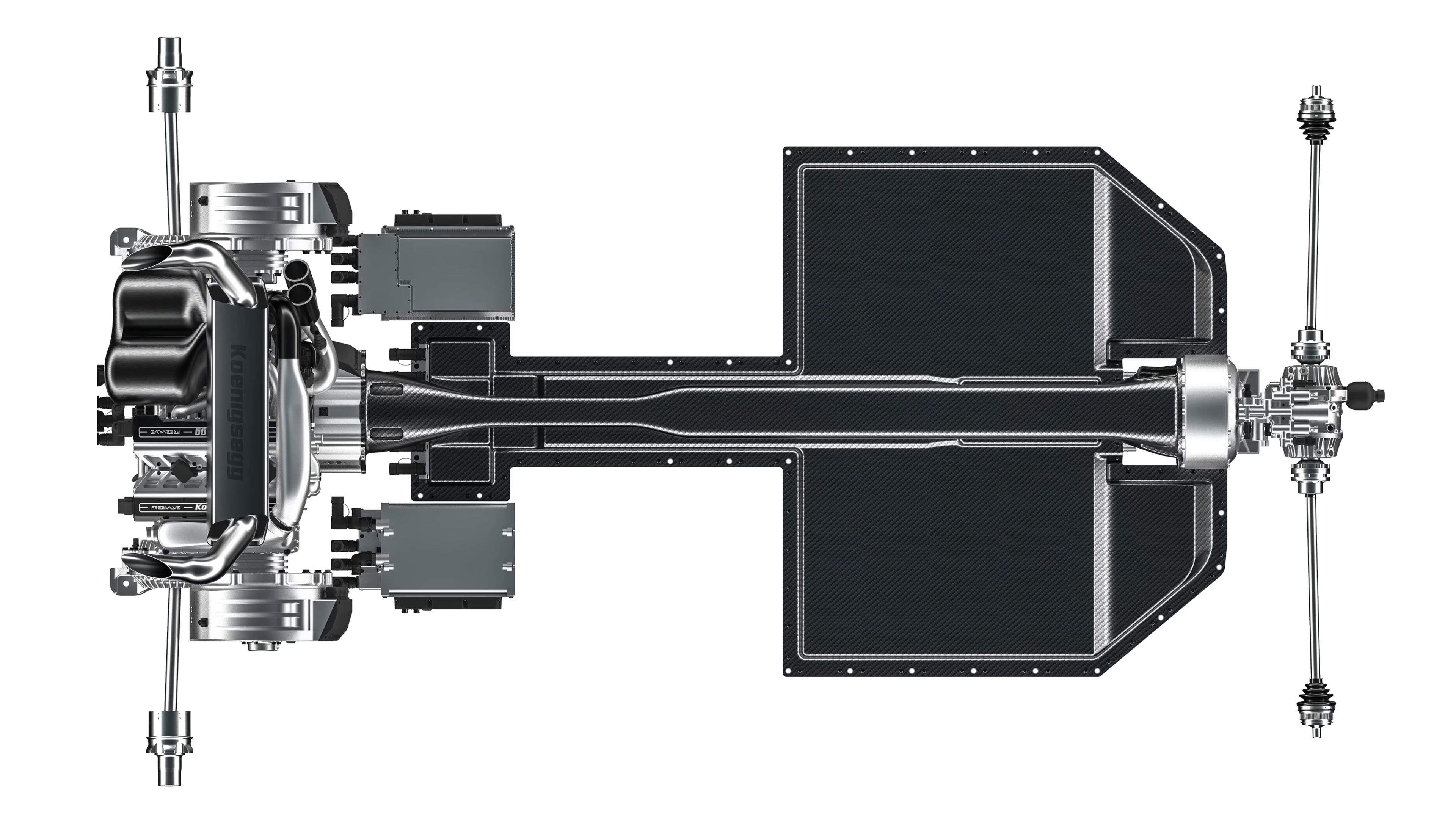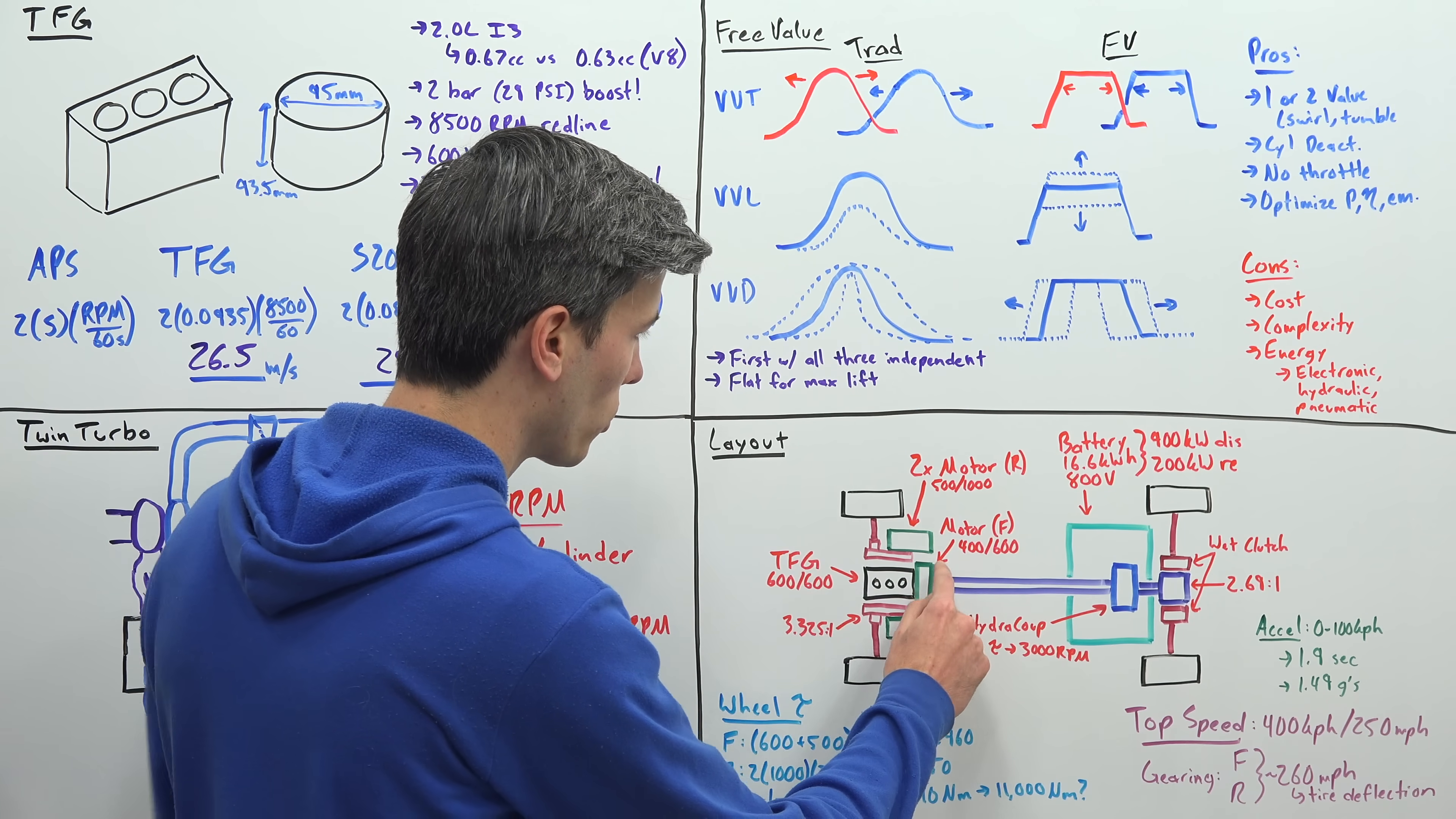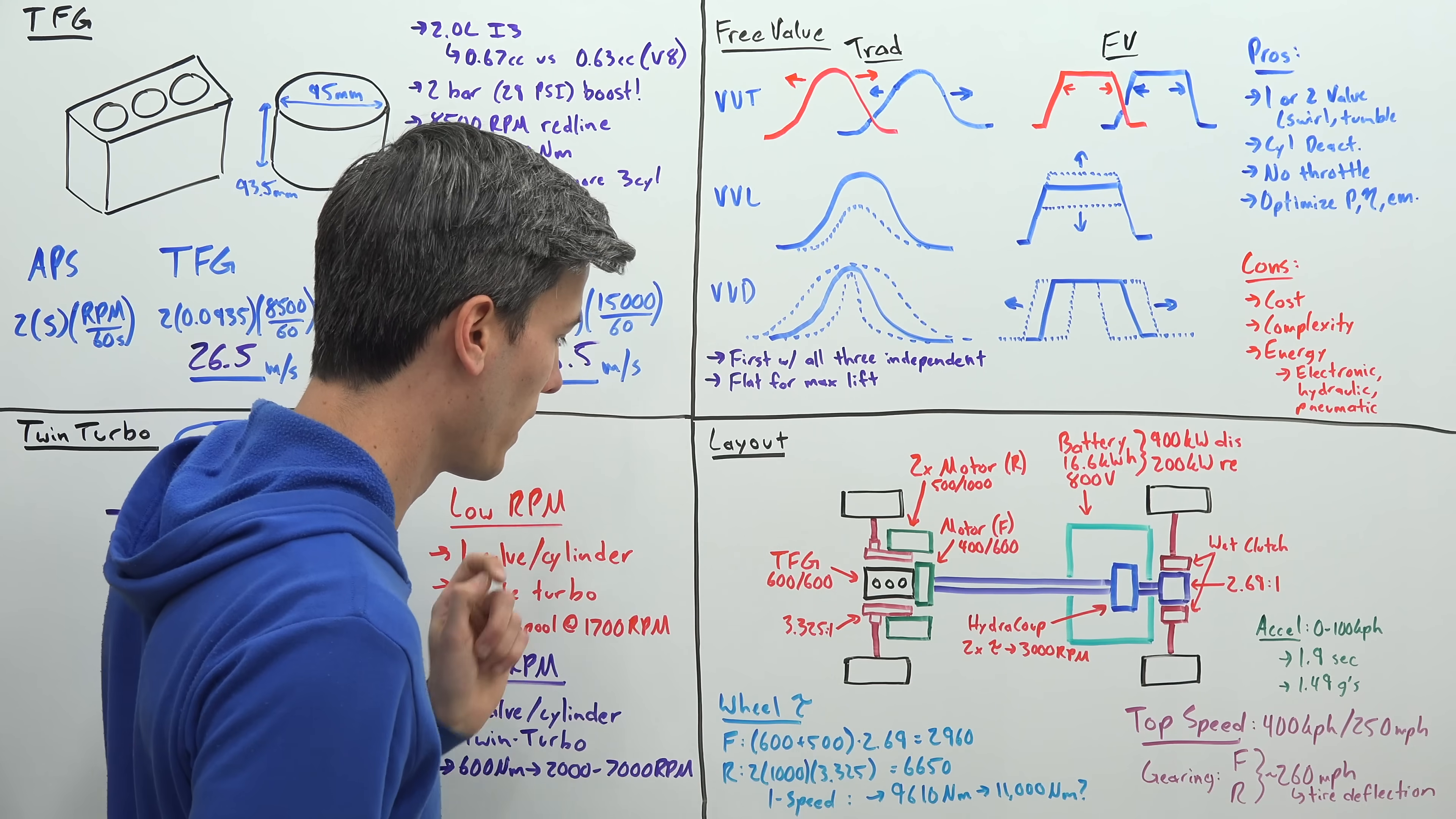Now let's go back to our layout. And what's interesting about this is just like the Koenigsegg Regera, there are not multiple gears here. So all of our power sources are passing through just a single gear ratio. So our tiny friendly giant engine at the back, coupled with that motor in front of it, is sending torque to the front, which has a gear ratio of 2.69 to 1 with that ring and pinion. And then in the rear, we have two electric motors, each has its own individual gearbox, with a 3.325 to 1 gear reduction.